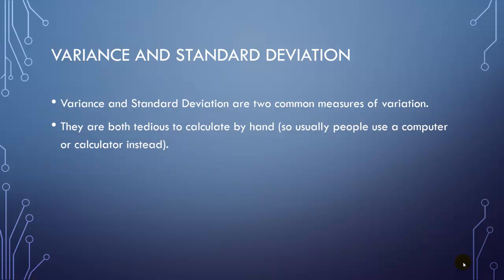Variance and standard deviation are two common measures of variation that address this problem. They're both tedious to calculate if you're doing it by hand, so most people use a calculator or computer to do this.